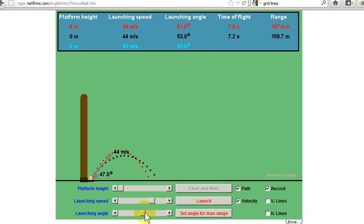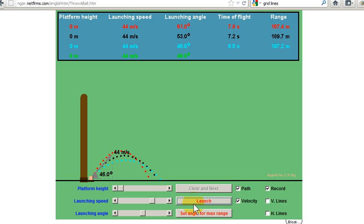Let's bring the angle down to 45 degrees, say 46 degrees. So here the range is 197.2. Let's make the angle even smaller, say 42 degrees. Here we see the range is 196.3 meters.